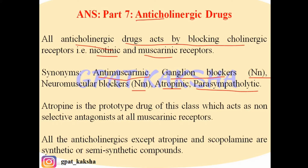Atropine is the prototype drug of this class, meaning its actions are considered representative of all anticholinergic drugs. It acts as a non-selective antagonist at all muscarinic receptors — M1, M2, M3, M4, and M5. Non-selective means it does not act on just one particular receptor subtype. However, it may show a stronger response at a particular receptor at a certain dose, acting at higher or lower doses depending on the receptor.